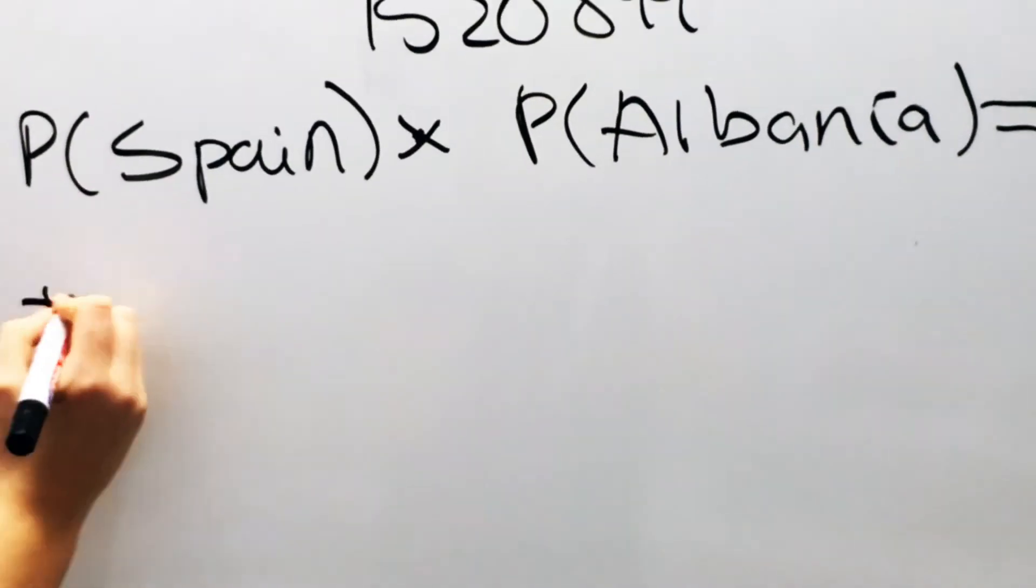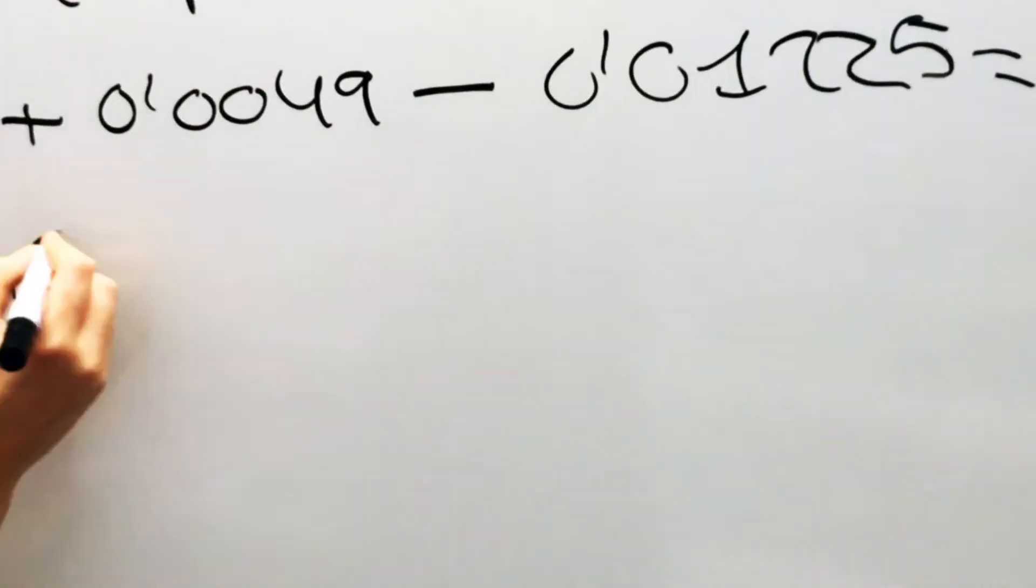To calculate A and B, Spain and Albania, we multiply them and we plug the result in the formula.